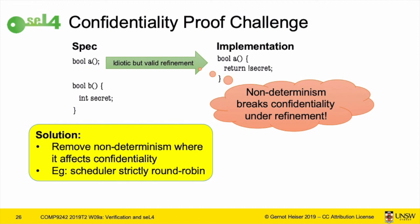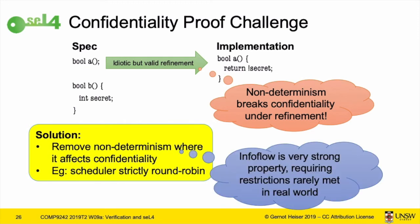This is nice on paper, and we say seL4 has a confidentiality proof. But if you really look at it, it's not a particularly useful property in practice. Information flow reasoning is a sledgehammer approach — such a coarse property that if you make the system conform to it, meaning no information is allowed to flow across certain boundaries, you get an extremely restricted system. We actually use this separation kernel setup of seL4 in some military-style devices, which I'll give an example of later. But in most systems including the ones you'd build, this is way too strong a property to be usable.